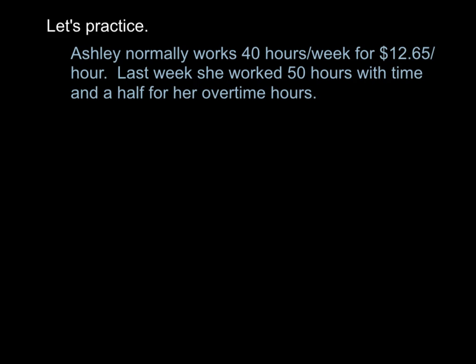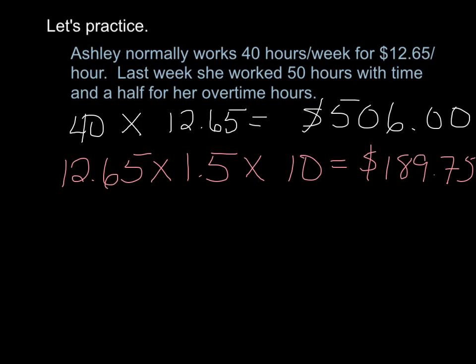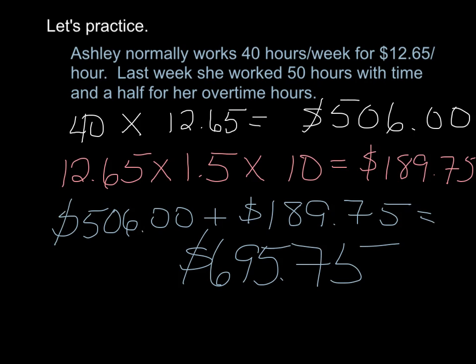Let's practice. Ashley normally works 40 hours per week for $12.65 per hour. Last week she worked 50 hours with time and a half for her overtime hours. So, 40 hours times $12.65 gives us $506. And $12.65 times 1.5 times 10 overtime hours gives us $189.75. Adding together: $189.75 plus $506 gives us a total of $695.75.